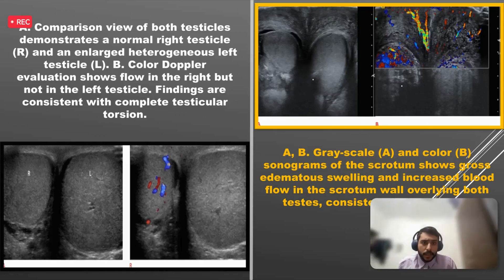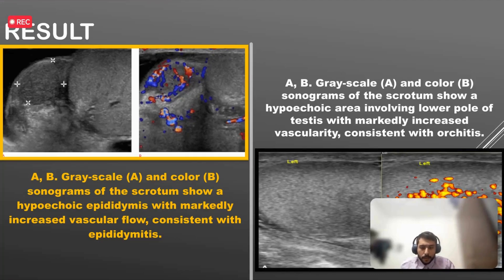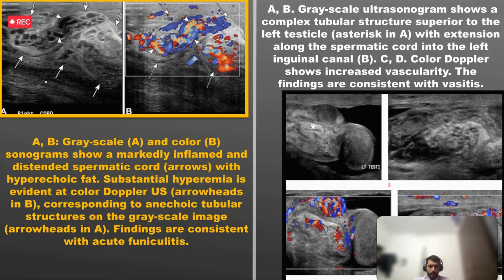The second image shows diffuse edema of the scrotal wall and increased vascularity — this is cellulitis of the scrotal wall, where only the wall is affected and the testis is normal. In the next image, funiculitis is shown: the spermatic cord appears bulky, edematous, and hyperechoic on Color Doppler, with tubular structures representing traversing vessels. Vasitis, inflammation of the vas deferens, usually accompanies funiculitis and results from retrograde infection passing up from the seminal tract.